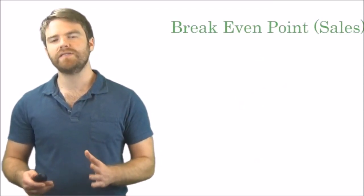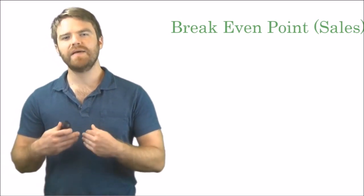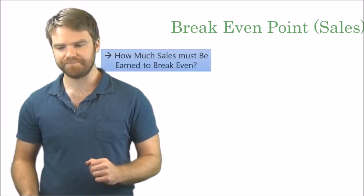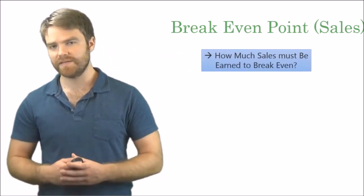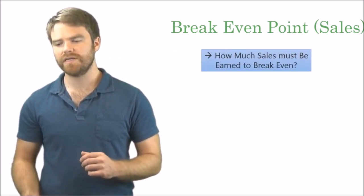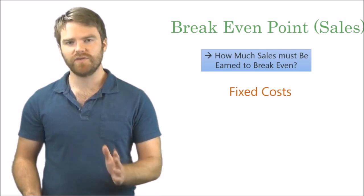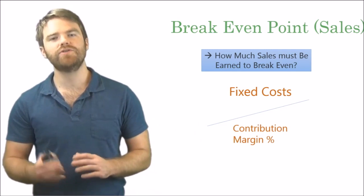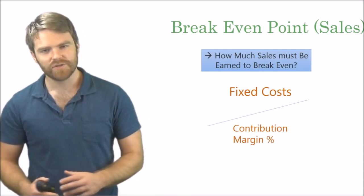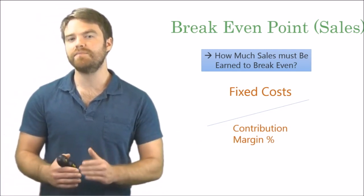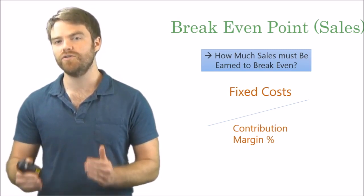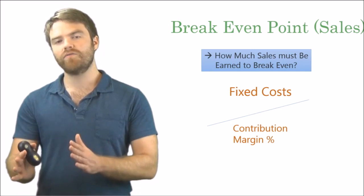Next, let me show you break-even point in sales. How much sales do we have to earn to break even? As you see here, how much sales must be earned to break even? Well, you take your fixed costs, you divide it by your contribution margin percentage. So remember in the break-even point in units video, you divided by contribution margin in units. Now for break-even point in sales, you divide by contribution margin percentage. That's what changes here, the denominator.